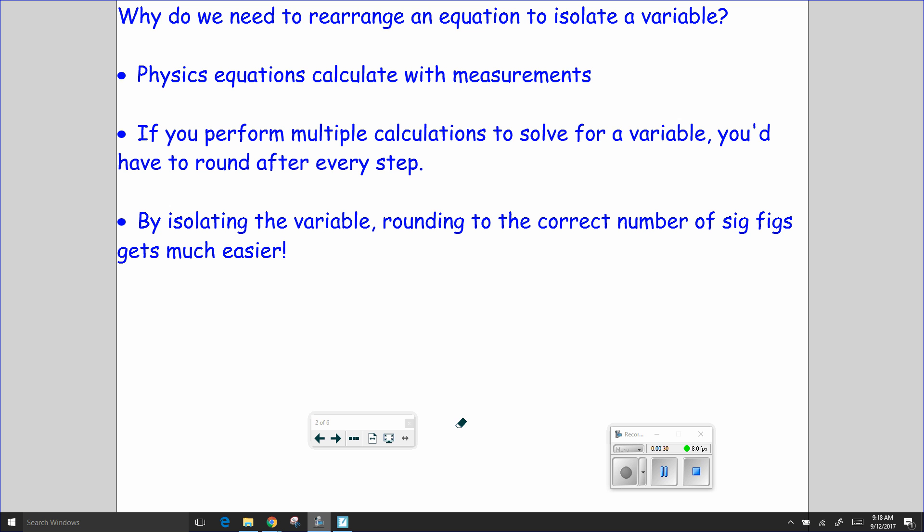Why do we need to isolate a variable in a math equation? Well, remember those variables represent measurements. And if we have to do multiple steps in order to solve a physics equation, we have to round those measurements after every single step. That makes the error get larger and larger as we keep on doing the calculation.